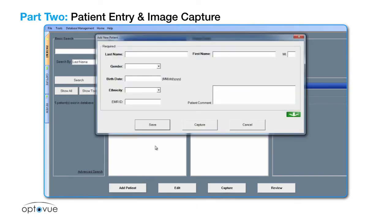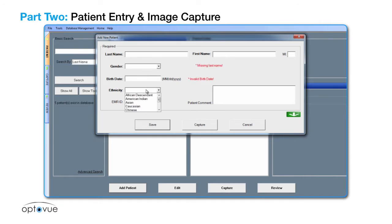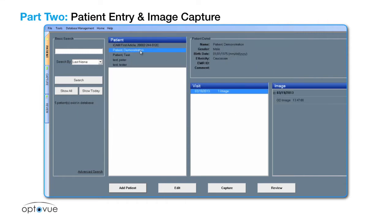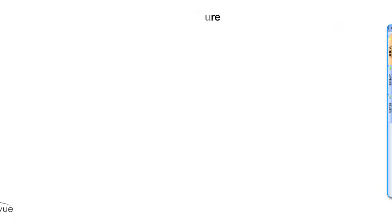Click on add new patient. Enter last name, first name, gender, date of birth, and ethnicity, then select capture. If the patient is already entered, click search or show all, click on the name, and select capture.